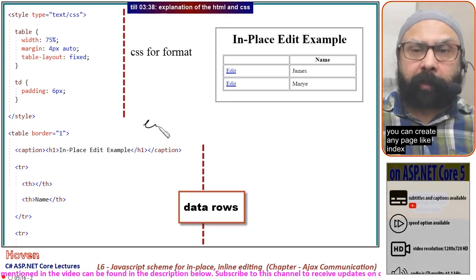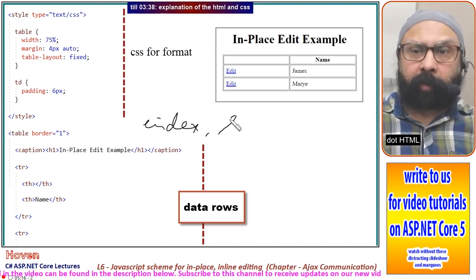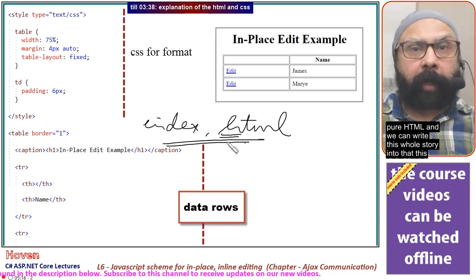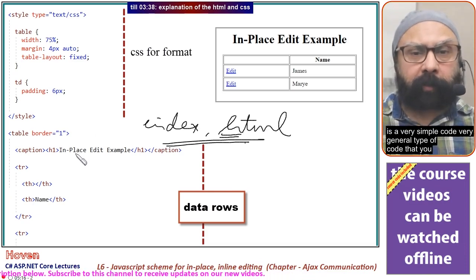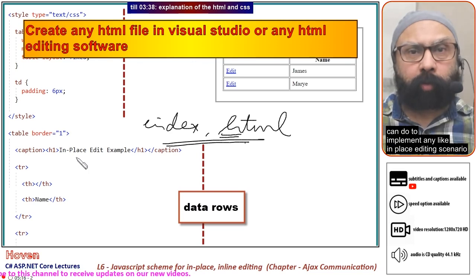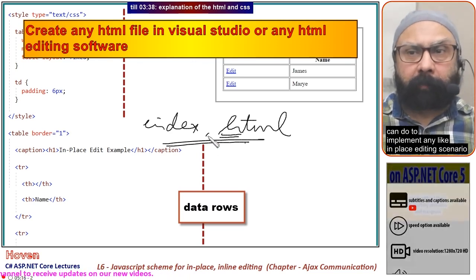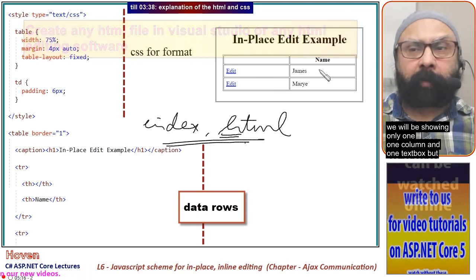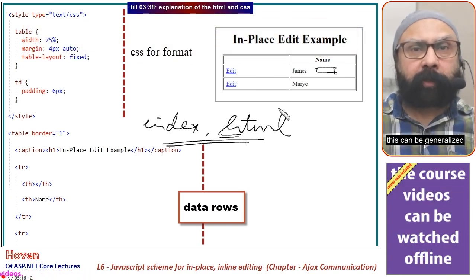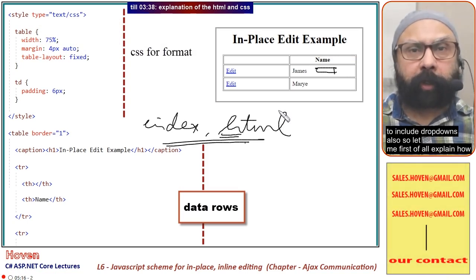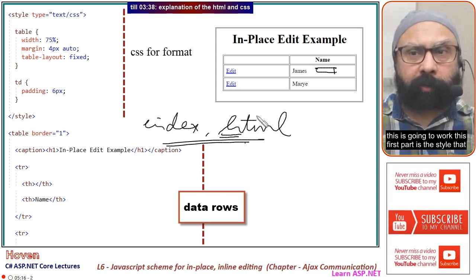You can create any page like index.html, pure HTML, and write this code. This is very simple, general code to implement any in-place editing scenario. We will show only one column and one textbox, but this can be generalized to include radio buttons and dropdowns. Let me explain how this works.